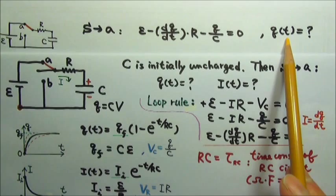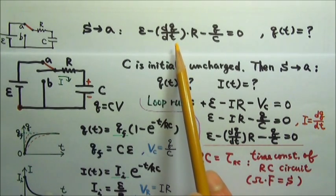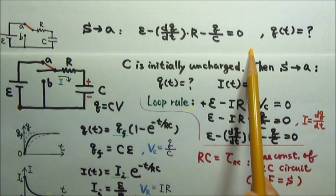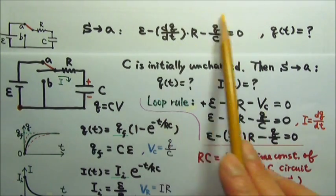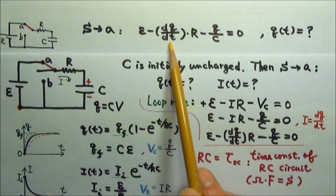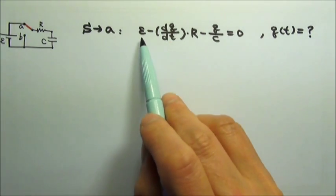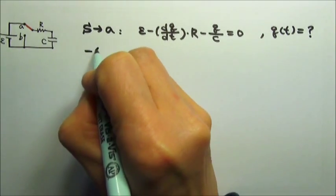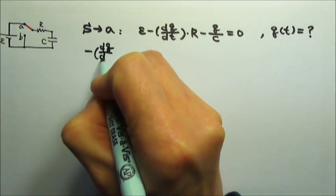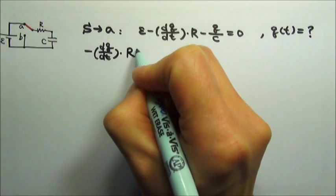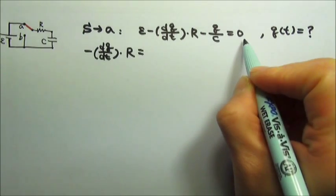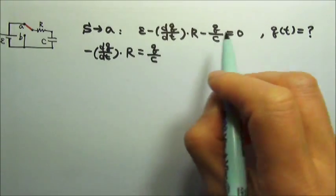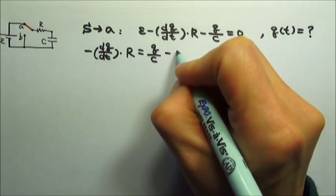we have to separate the variables. So we need to move q to one side and t to the other side. First, we can rearrange this equation to get dq/dt. We can move these two terms to the other side. So this state here, negative dq/dt times R equals to, if I move this term to the other side, it becomes plus q over C. If I move that term to the other side, it becomes minus ε.